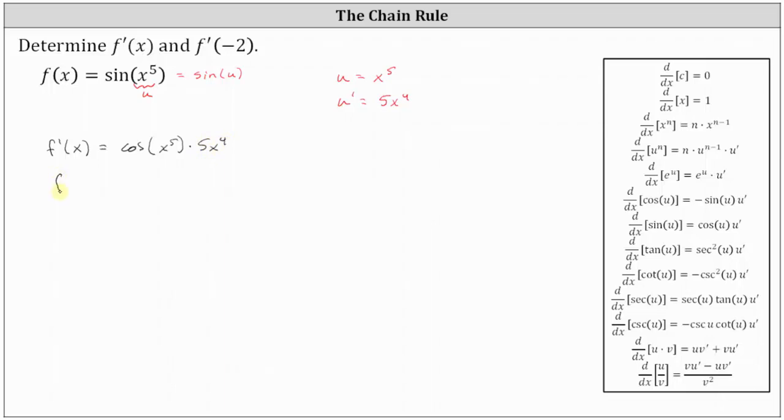Let's rewrite this as f'(x) = 5x^4 cos(x^5).